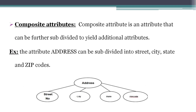Coming to composite attribute: a composite attribute is one that can be divided into different fields. For example, address is an attribute that can be subdivided into street number, city, state, and pin code. Any attribute that can be subdivided this way is called a composite attribute. For a person entity, the address attribute can be further subdivided, so it is a composite attribute.